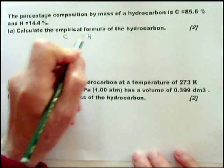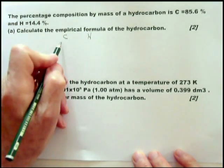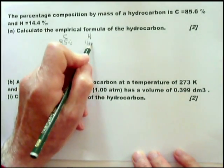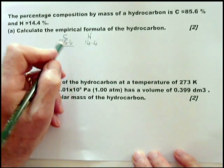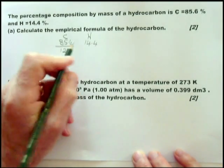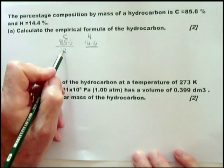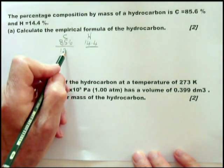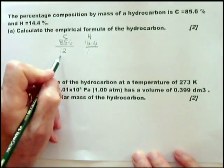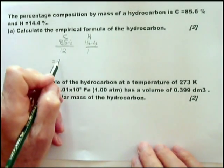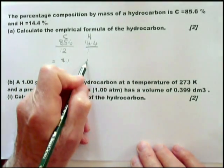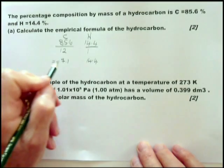You divide those by the atomic masses of the various elements. I'm going to use 12, but you could use the figures from the periodic table which are slightly different—12.01 and 1. That comes to 7.1 and 14.4.